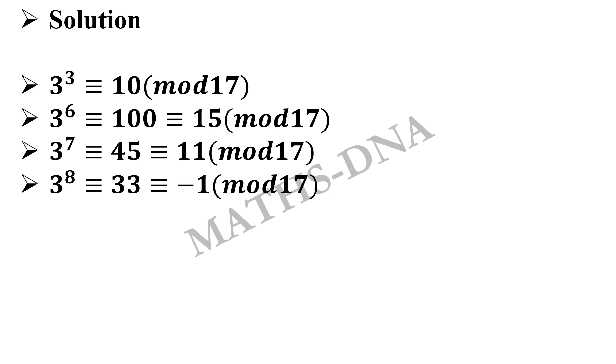Always remember, when we are finding the order of an element, we try to find when it equals 1. Here it equals -1 at 3⁸. So if we square both sides, we get 3¹⁶ ≡ 1 (mod 17).